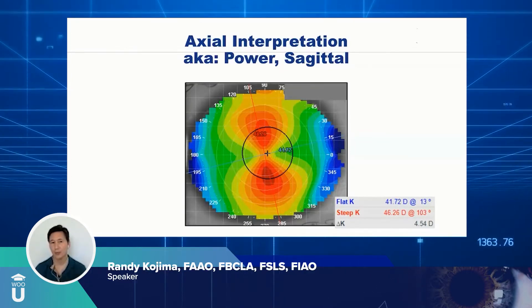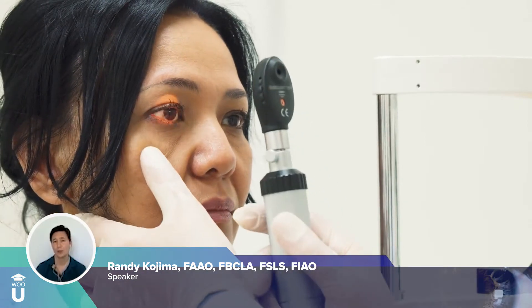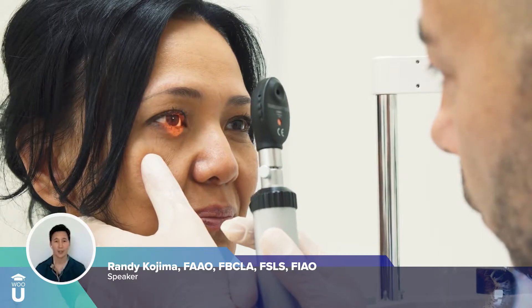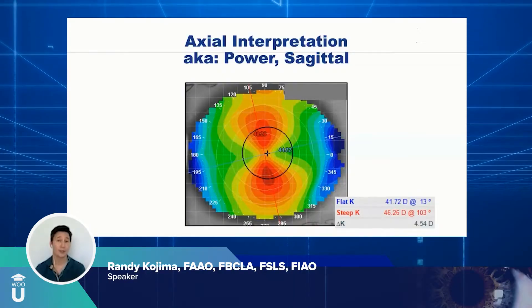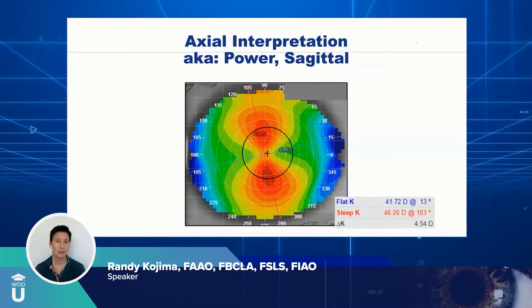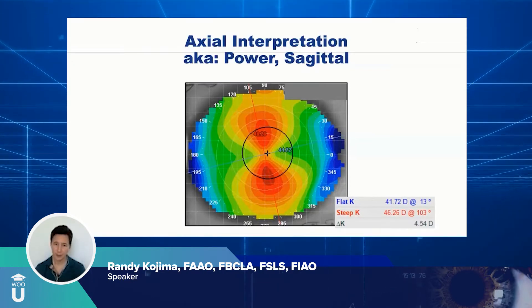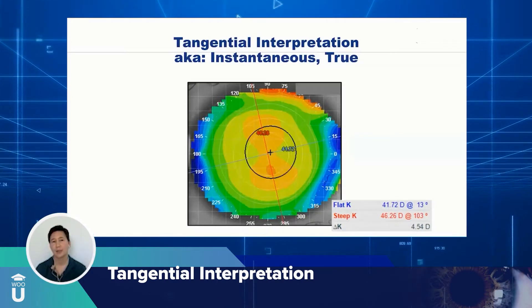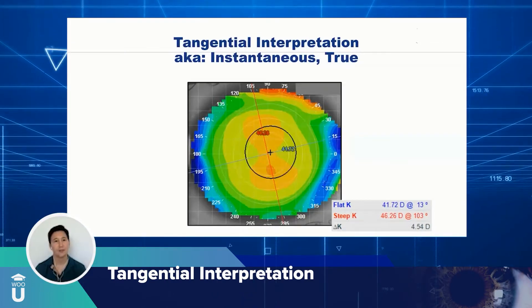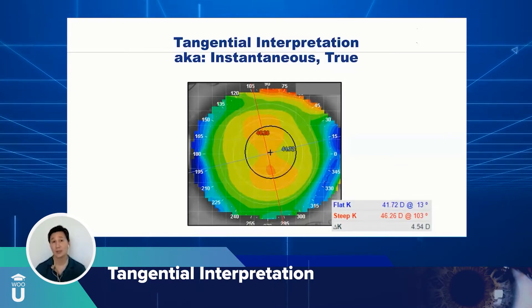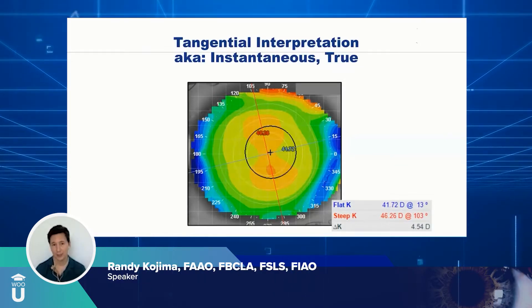When you think about power, you might ask: should this patient see well? Should we have good quality of vision? Although it's a high corneal astigmatism of four and a half diopters, it's otherwise a very regular eye shape. Axial is one of the ways you can interpret the eye shape relative to power or vision. The tangential map is another interpretation that converts the data slightly differently, and it's best used to understand the shape of the eye.